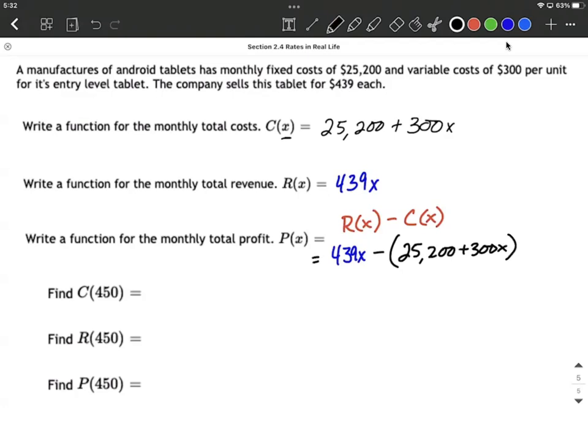That's important so we don't make a silly error along the way, right? It was revenue minus the cost. So I simply subtracted away the entire cost function. But you have to be careful that this is really $439X minus $25,200. And that negative also gets distributed to that $300X. So don't forget that this negative gets distributed to both those terms.